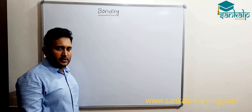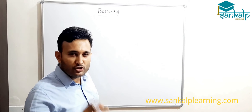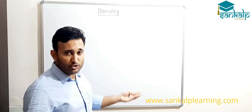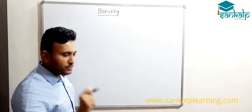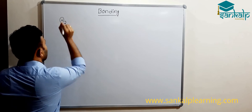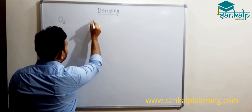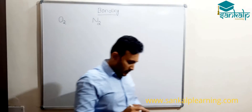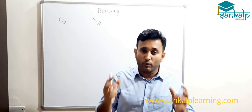Let us take very simple molecules like Oxygen and Nitrogen. The formula of Oxygen is O2 and Nitrogen is N2. So let us understand how bonding takes place in different molecules.